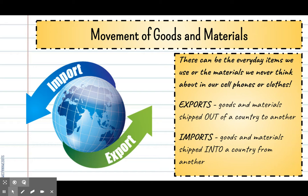Welcome back. So we know there are three different types of movement that we focus on as geographers. Next we are going to look at the movement of goods and materials — essentially how do the things that we use every day, or the materials in our cell phones or clothes, get here? I don't know of a single avocado tree in Colorado, but we have avocados in the store. So how do those different goods and materials get to our specific location?